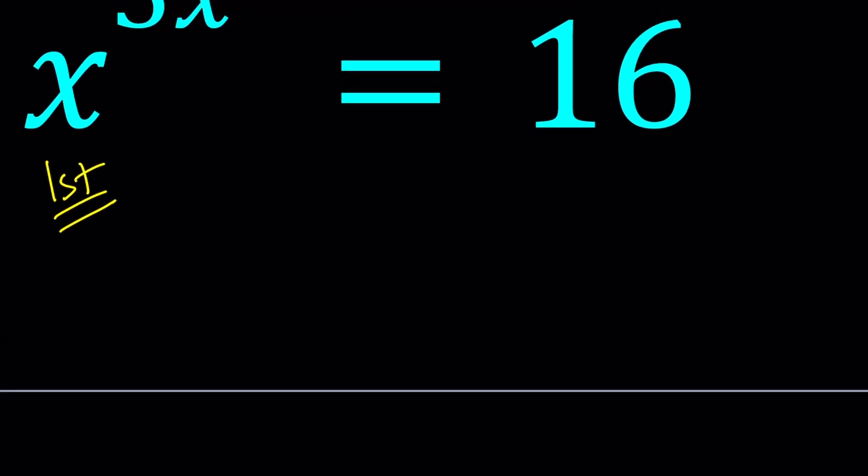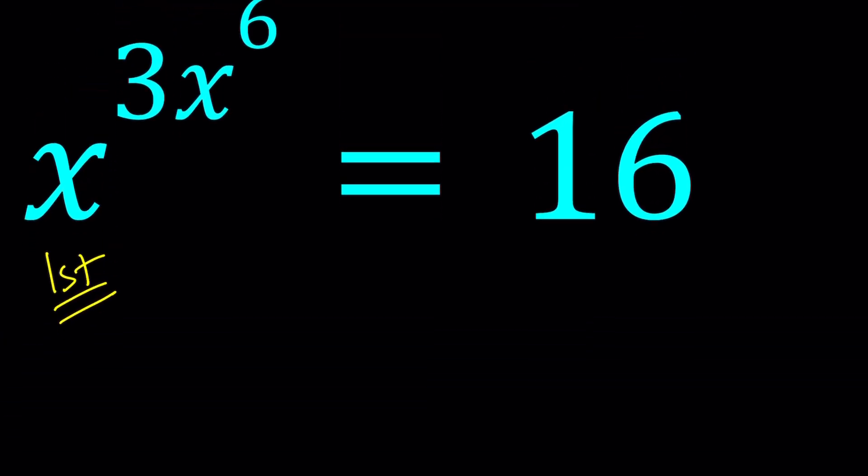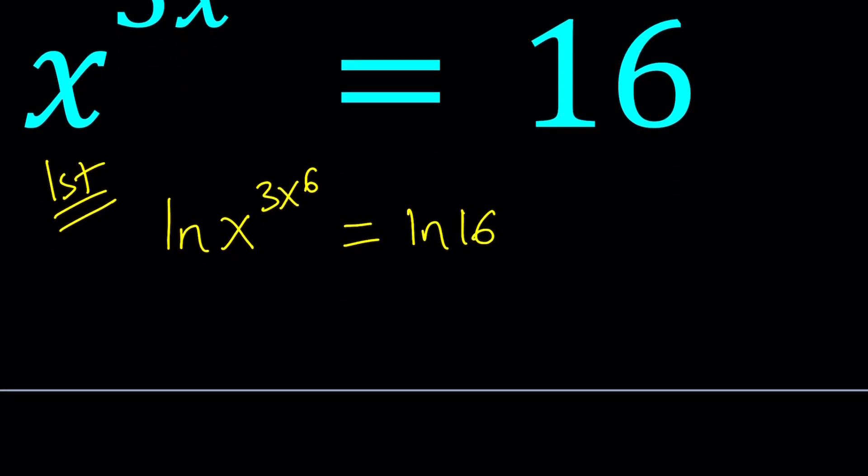Now, for my first method, I'm going to go ahead and natural log both sides. I want to bring this variable down, so let's ln both sides. ln is the natural log, which is the base e. And now this brings down the exponent here, so we can get 3x to the sixth multiplied by lnx equals ln 16.